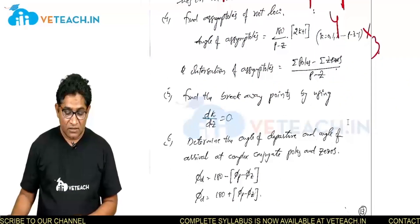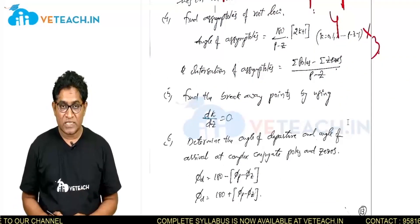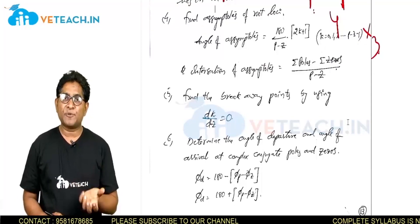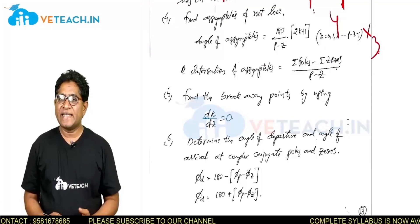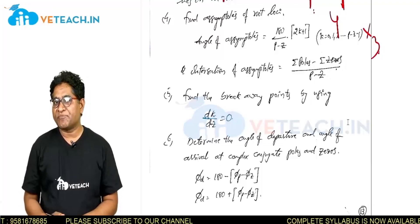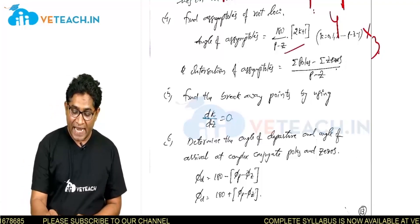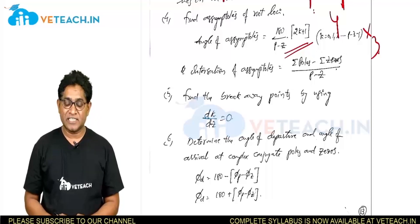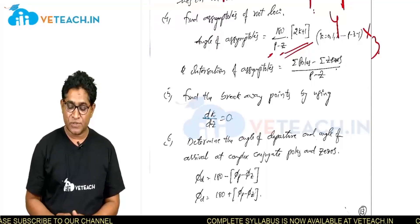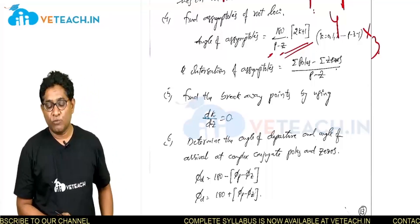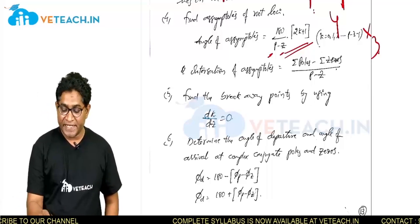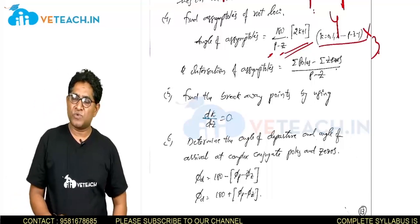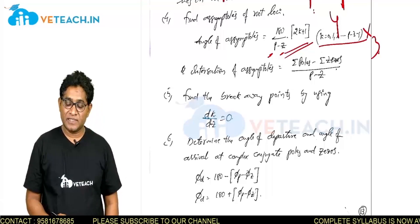Next, find the asymptotes of the root locus. Asymptotes are approximations of the root locus as gain k tends to infinity. The angle of asymptotes is given by 180° × (2k+1) / (P−Z), where k takes values 0, 1, 2, ... up to P−Z−1.